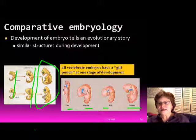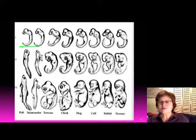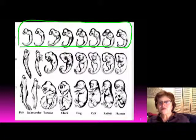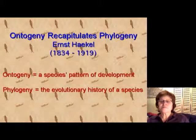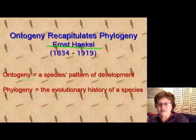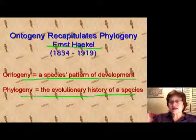This is what Haeckel came up with: that ontogeny recapitulates evolution. His figure uses many different animals, and you can see that at the first stage they are so extremely similar that no one can tell them apart — the only time you can tell them apart is toward the end of development. Haeckel stated that ontogeny — the species pattern of development — recapitulates phylogeny, the evolutionary history of a species.